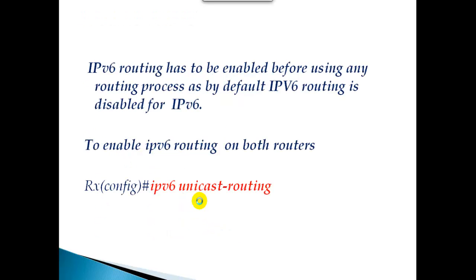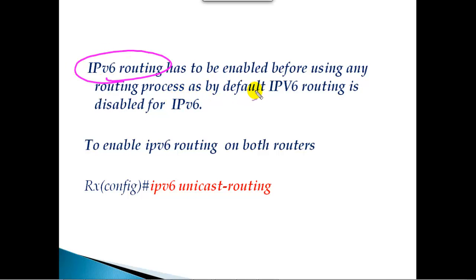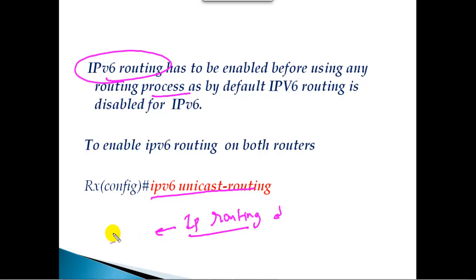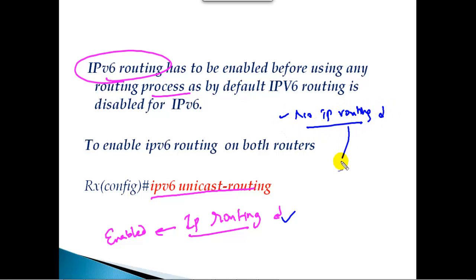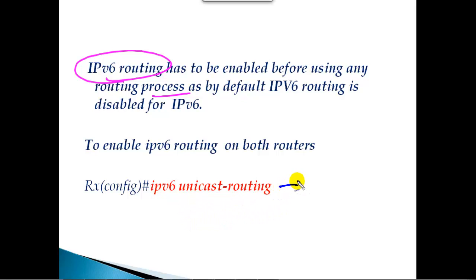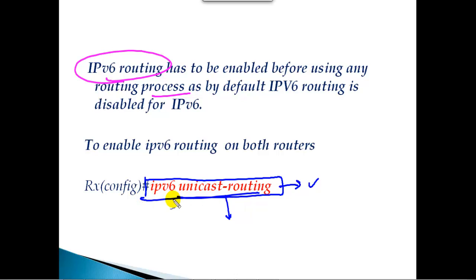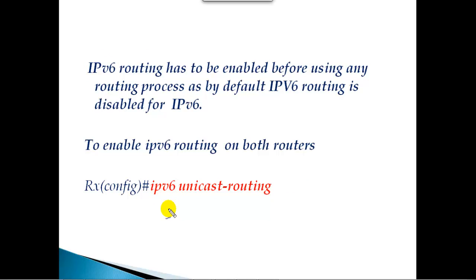We'll start with static routing first. One important thing to keep in mind: whenever we want to use IPv6 routing, it must be enabled before using any routing process. We need to give the command 'ipv6 unicast-routing'. This is equivalent to the 'ip routing' command in IPv4, which is enabled by default. However, in most Cisco IOS versions, IPv6 routing is disabled by default, so you'll get a message saying IPv6 routing is not enabled. Make sure to enable 'ipv6 unicast-routing' before configuring any routing.